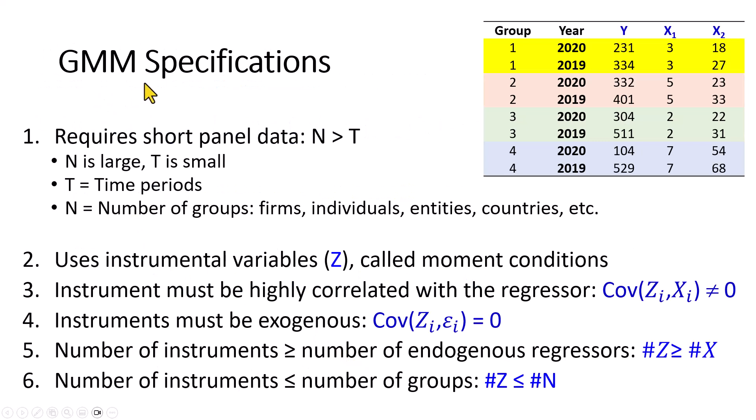So what are the GMM specifications? One, it requires a short panel, which is the case where the number of groups is greater than the number of time periods, as illustrated right here. We have four groups and two time periods. And so we say n is large, t is small.